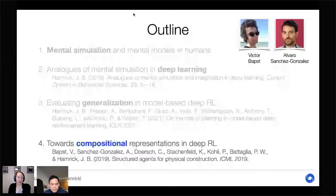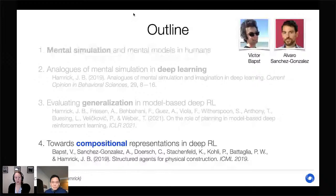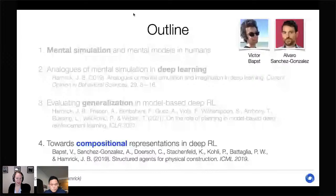Since we need good representations for all of these things, the rest of the talk proposes one direction: building more compositional representations in deep RL that can be used not just for world models but also for policies and value functions. This is work led by colleagues Victor Bapst and Alvaro Sanchez-Gonzalez, in collaboration with a number of other great people.